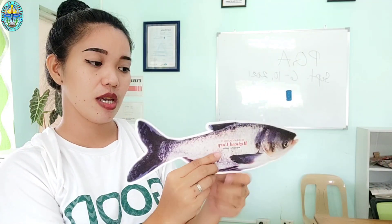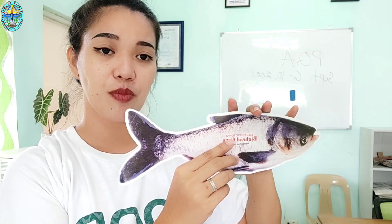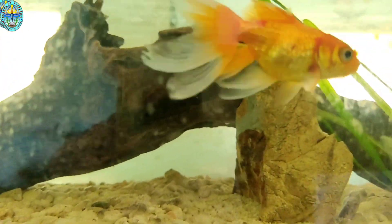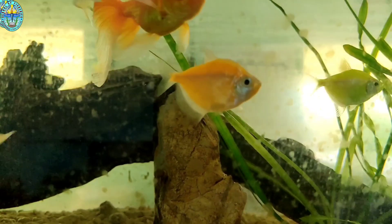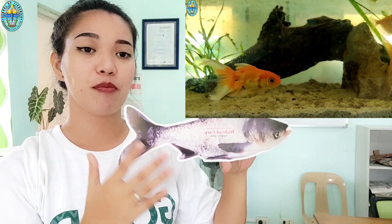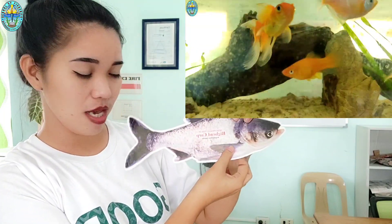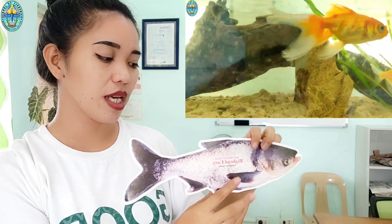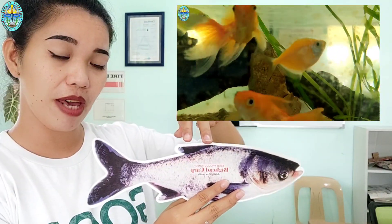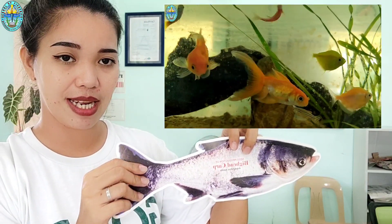Distinct to a fish is the fin. Generally, fins serve simultaneously as propeller, stabilizer, and in maneuvering. However, each fin has its specific purpose. Fins by position may be paired, like the pectoral fins here and the pelvic fins down below, or they can be median, like the dorsal fin, the anal fin, and the caudal fin here.